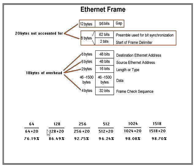As you increase your frame sizes, your efficiency ratio increases. The maximum transmission efficiency you can get is about 98.7 percent. Some customers who aren't well versed in these calculations may ask why you can't get 100 percent throughput — and this is how you can show it to them.